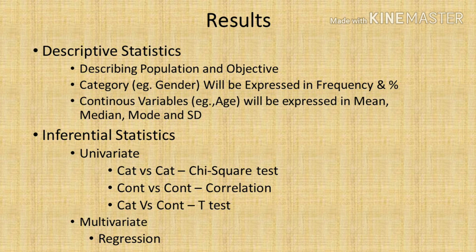When a continuous variable is associated with another continuous variable — for example, age associated with blood pressure, where both are numbers — we use a correlation test. These one-to-one associations are called univariate analysis. In multivariate analysis, we study how one variable is predicted by multiple variables, and there we use regression analysis.